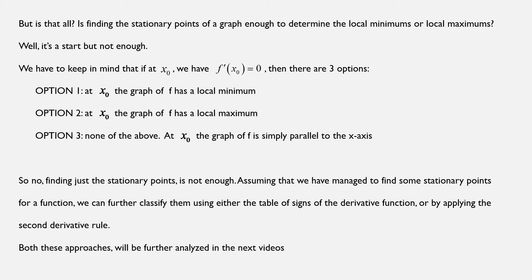So now, finding just the stationary points is not enough to determine the graph's local minimum or local maximum. Assuming that we have managed to find some stationary points for a function, we can further classify them using either a table of signs of the derivative function or by applying the second derivative rule. And both these approaches will be further analyzed in some of the next videos.